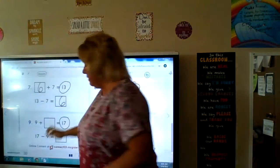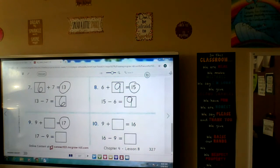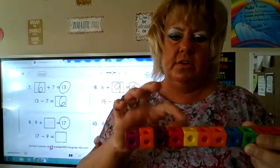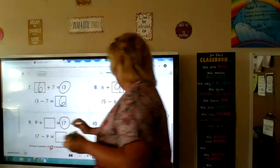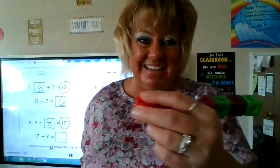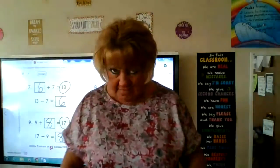If you got that right, go yeah! Down here we're going to start with 17. I have 17 blocks and I'm going to take away 9, because I know one part is 9. After taking away 9, I have 1, 2, 3, 4, 5, 6, 7, 8 left. So 9 plus 8 is 17, 17 minus 9 is 8, 17 minus 8 is 9. The parts of 17 are 9 and 8. If you got that right, go yeah!